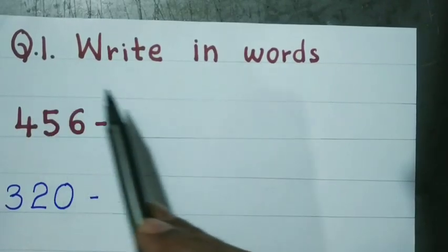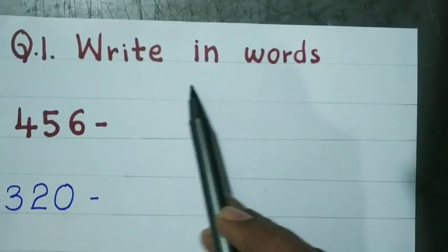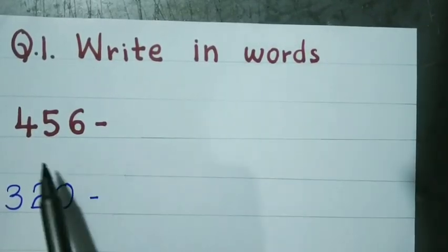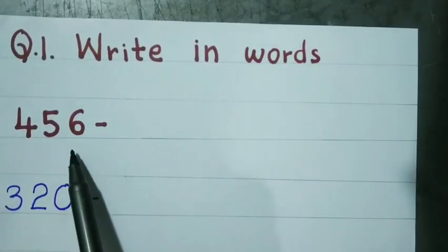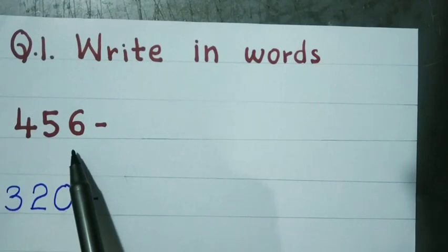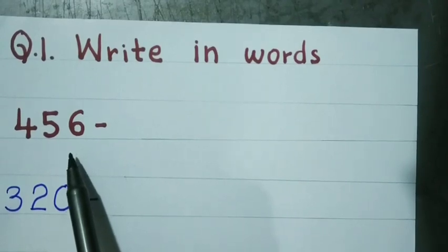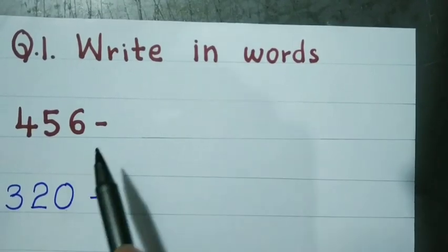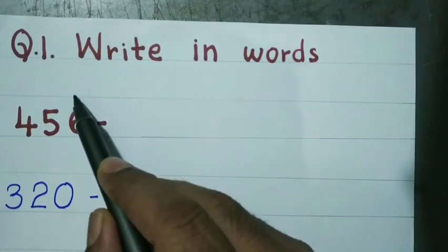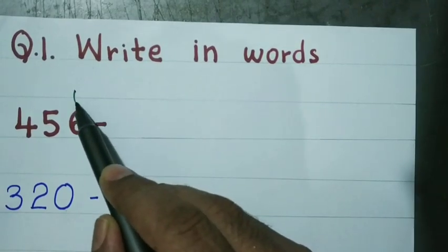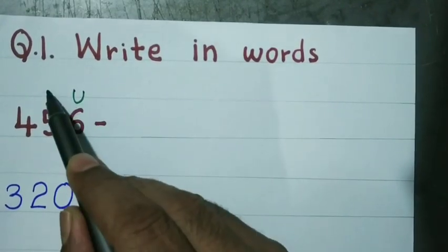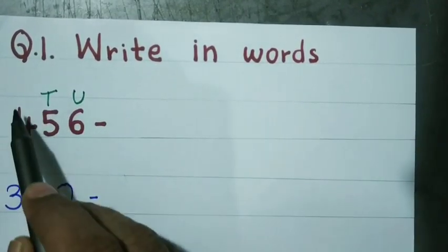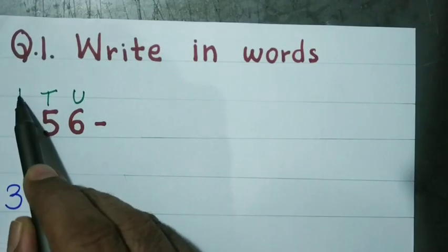Question number 1: Write in words. A number is given and you have to write the spelling of the given number. For that purpose, first write the place values: units, tens, hundreds.